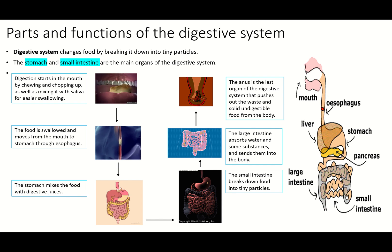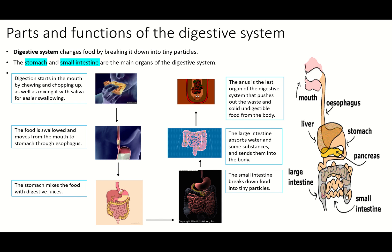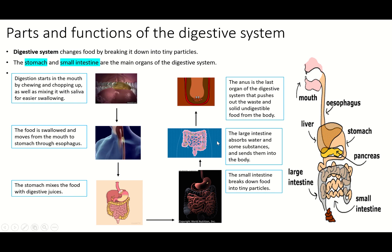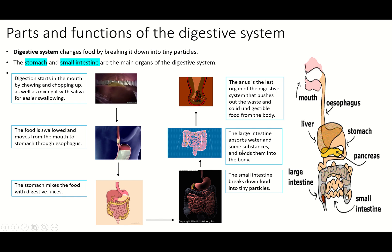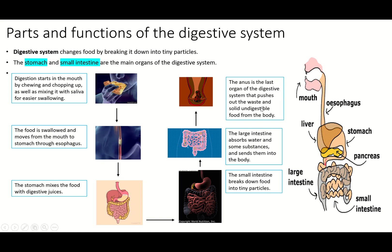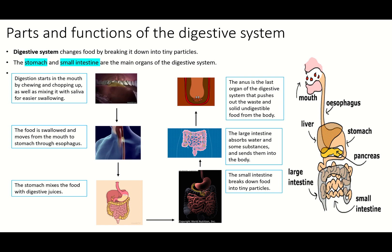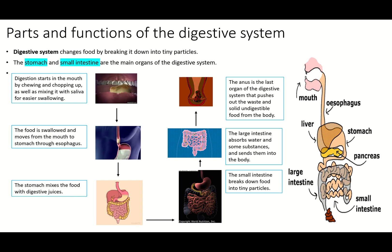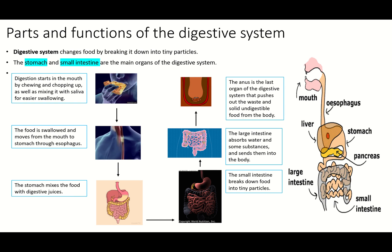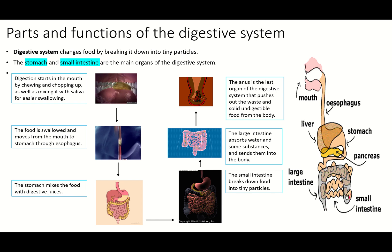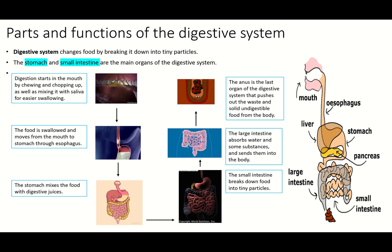The anus is the last organ of the digestive system. It pushes out the waste, solid, and indigestible food from the body. After the large intestine absorbs water and substances, the remaining waste that the body cannot benefit from is pushed out by the anus.